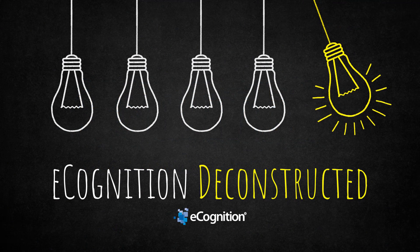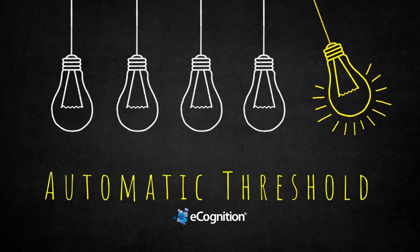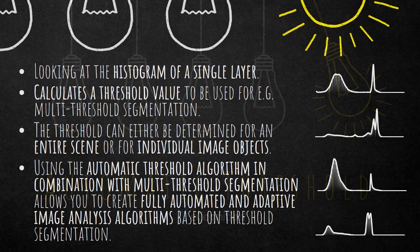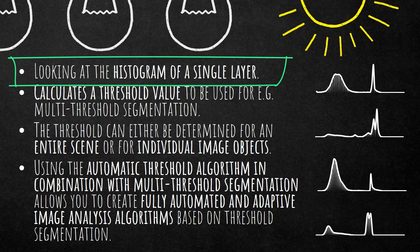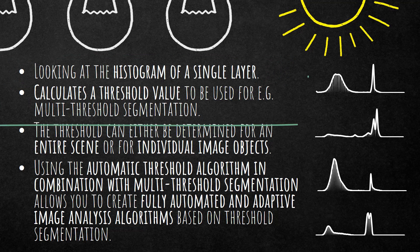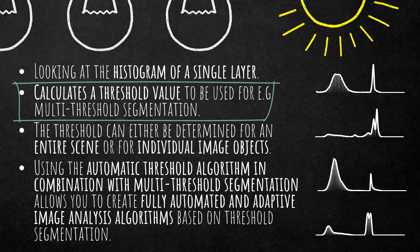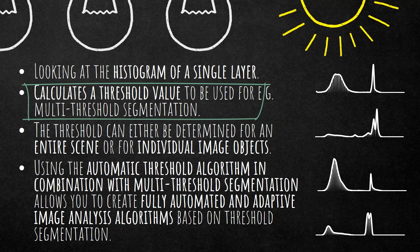Hello and welcome everyone to this eCognition Deconstructed video. Today we're going to have a look at the automatic threshold algorithm. This algorithm computes automatically a threshold based on the histogram of a single layer. You can then use this threshold as input, for example, for the multi-threshold segmentation.